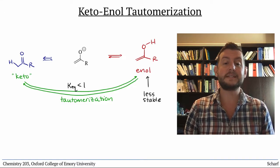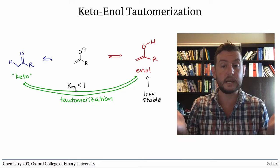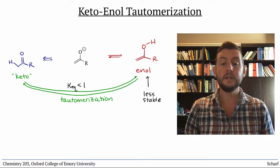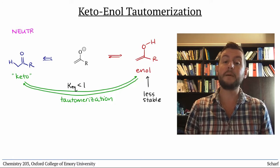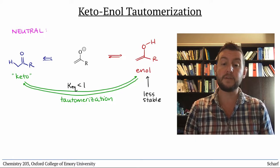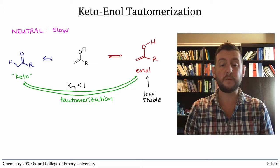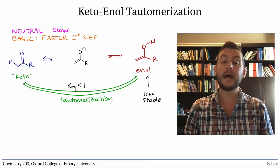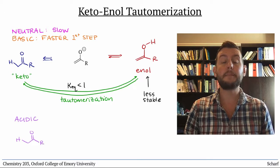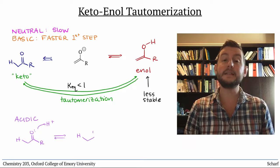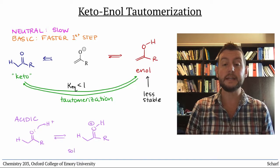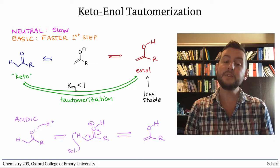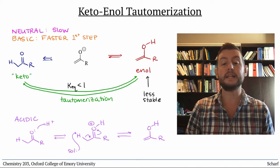The tautomerization process happens under any conditions—neutral, acidic, or basic. The mechanisms vary slightly depending on the conditions. Under neutral conditions, we don't have any strong bases around to deprotonate the alpha carbon, so that step is quite slow. Under basic conditions, the initial deprotonation is faster. Acids catalyze the reaction by protonating the carbonyl group first, making CO pi star more electrophilic, and therefore the alpha proton easier to remove. We'll delve a bit deeper into the reactivity of enols and enolates in the next videos.